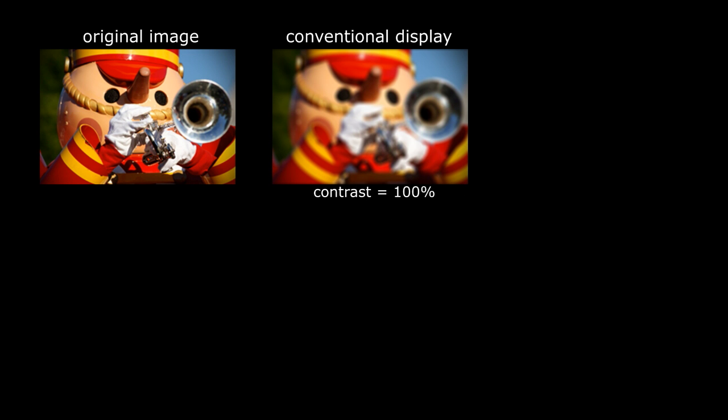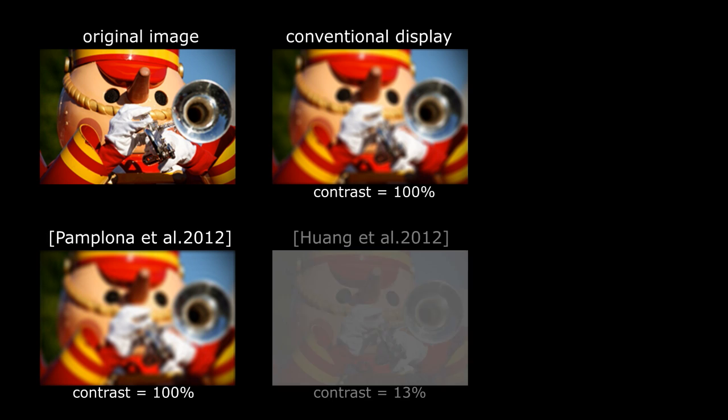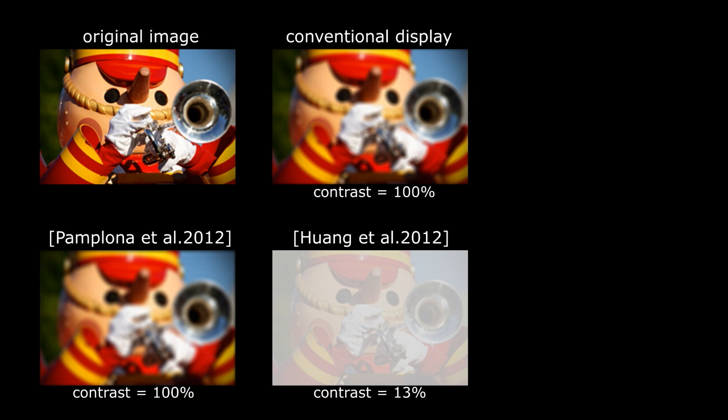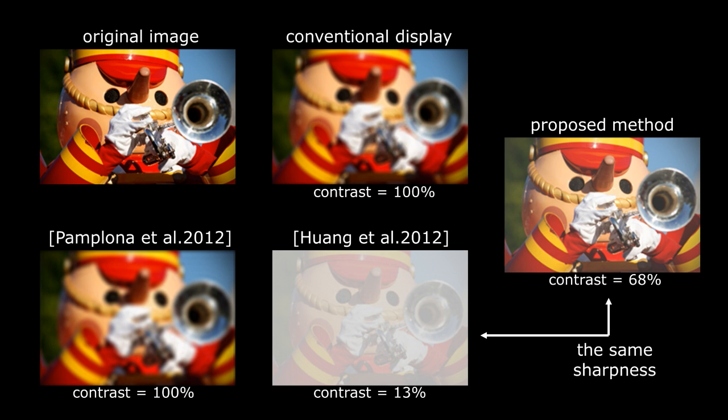First, we will show some simulated results. An out-of-focus image on a conventional display is blurred. Pamplona et al. only generates a slightly better image with a constrained hardware requirement. Earlier work multi-layer display produces a much sharper image but the contrast is low. At the same sharpness, our new method provides an image with much higher contrast.